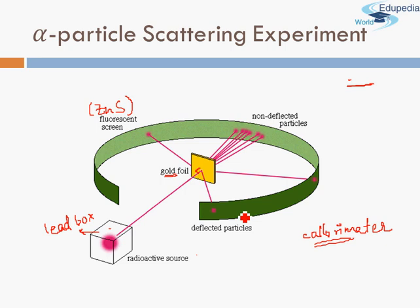So what they did was start bombarding Alpha Particles on the gold foil — one by one, thousands of times, even one lakh times. This shows how much hard work and patience they had. After this many tries, they finally were able to make some important observations.